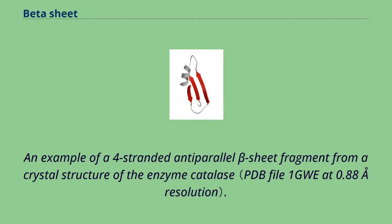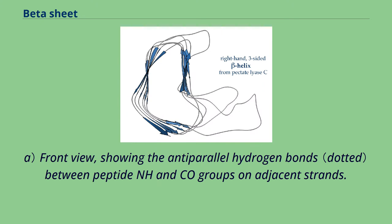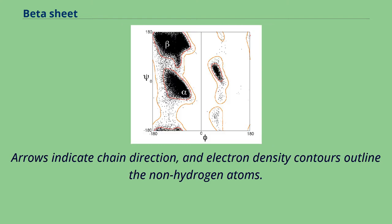An example of a four-stranded anti-parallel beta sheet fragment from a crystal structure of the enzyme catalase. Front view showing the anti-parallel hydrogen bonds between peptide NH and CO groups on adjacent strands. Arrows indicate chain direction and electron density contours outline the non-hydrogen atoms.